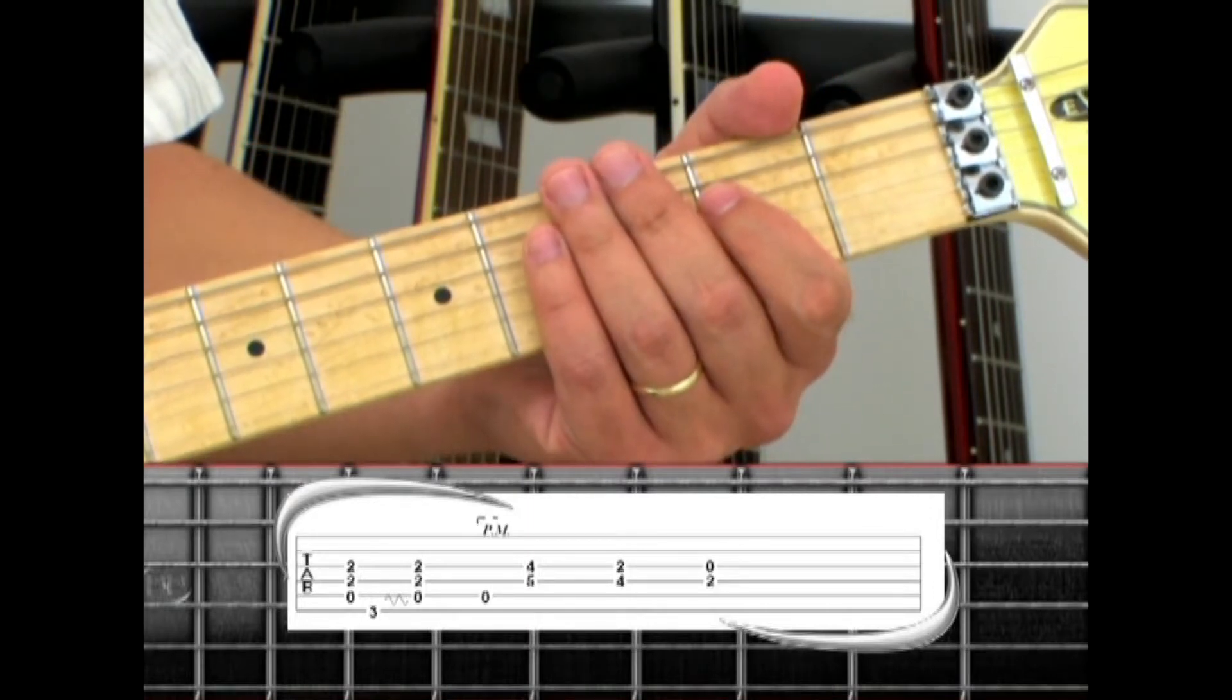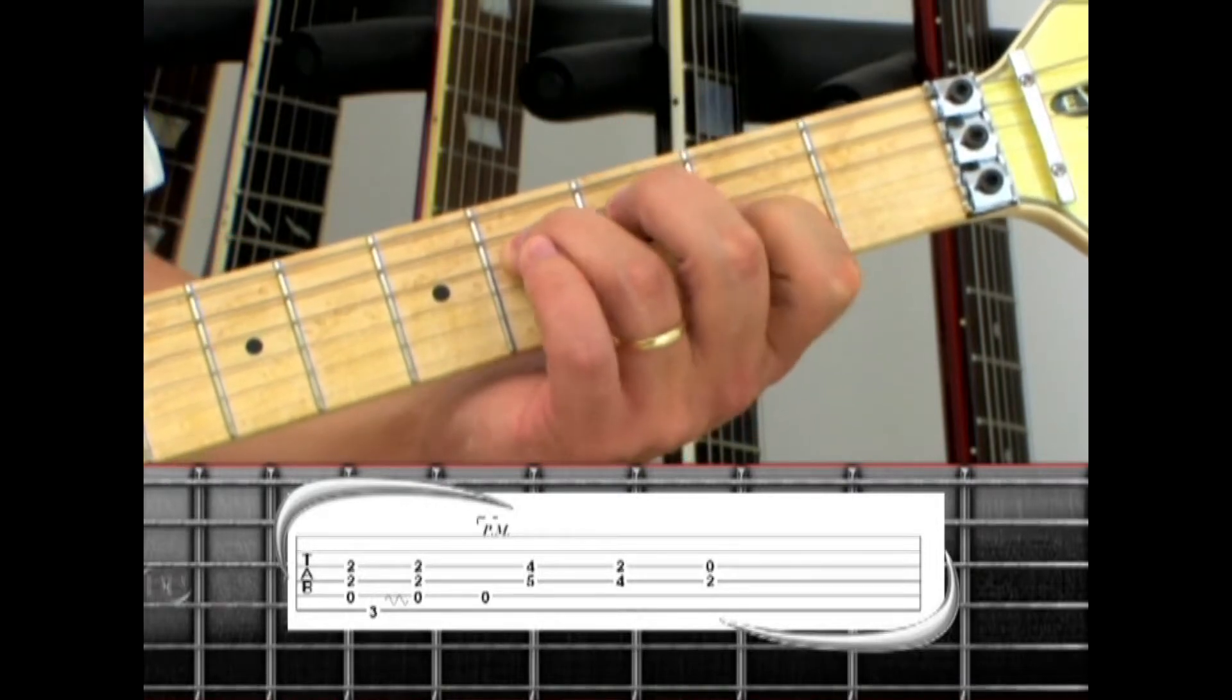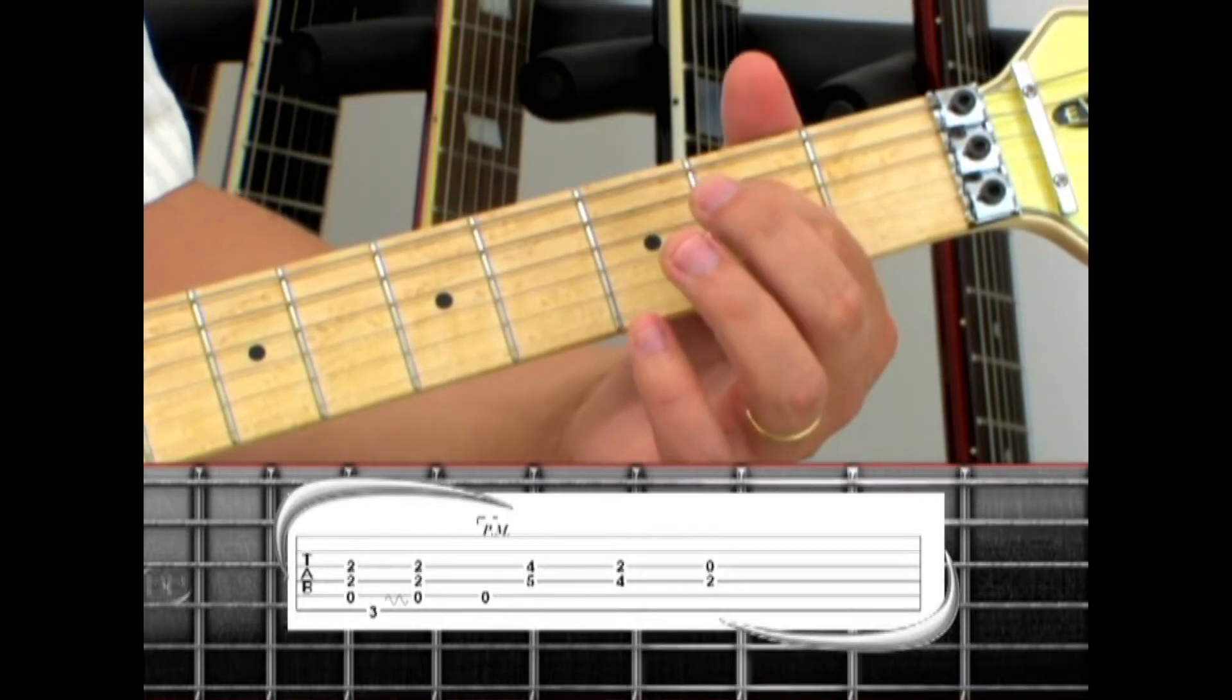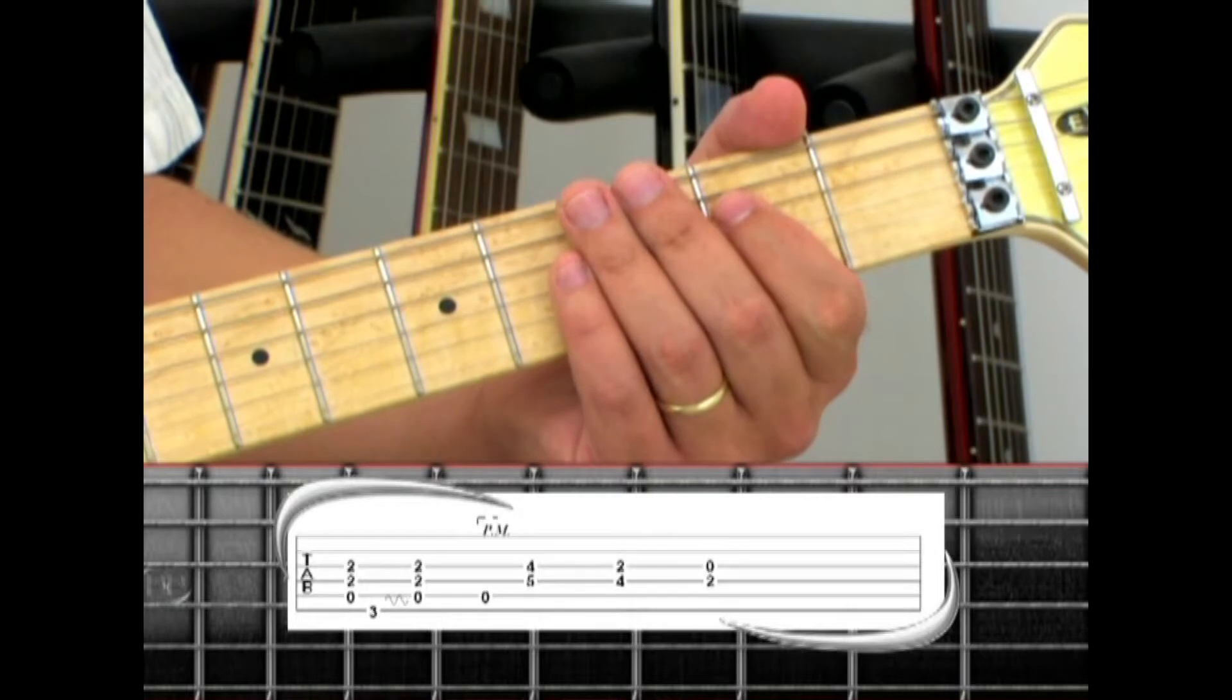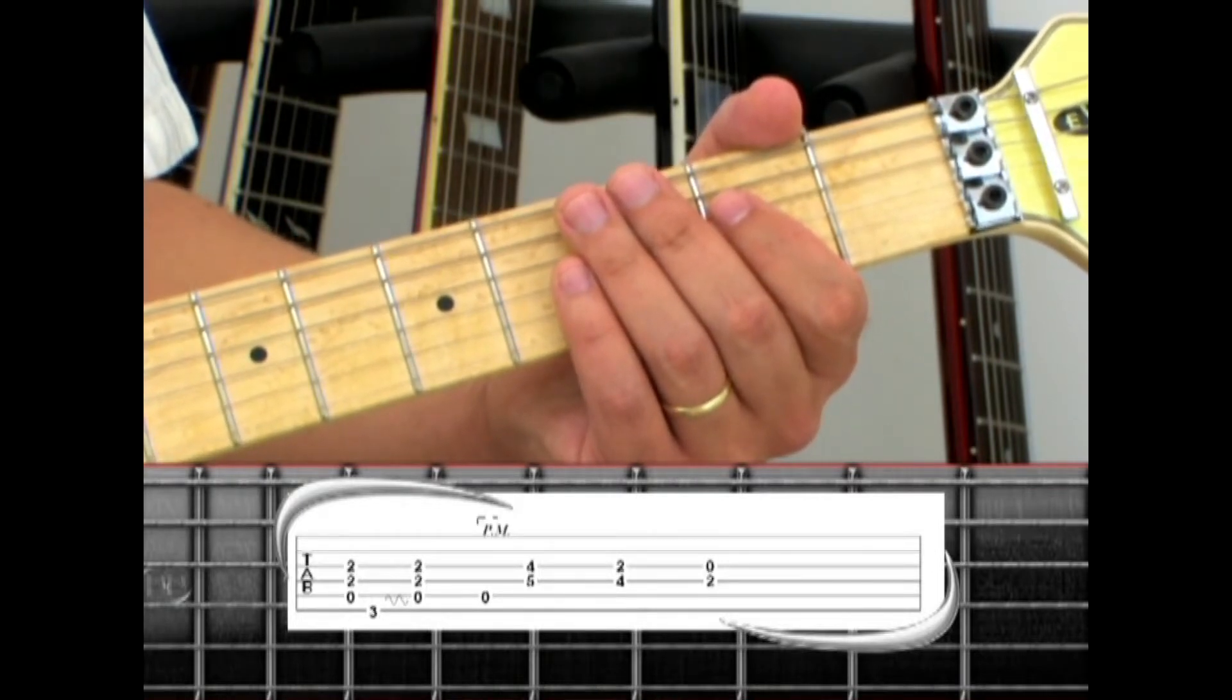Each of these double note combinations make up a partial chord. Frets 4 and 5 are a partial G chord. Down to 2 and 4 for a partial F sharp minor chord. Down to open and 2 for a partial E minor chord. Be sure to mute the strings between each partial chord with the palm of your picking hand.